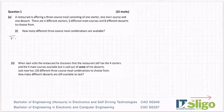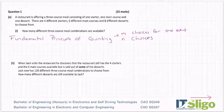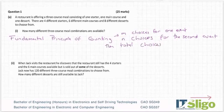This is what's called the fundamental principle of counting, and you could be asked for a definition of this. The fundamental principle of counting tells me that if I have m choices for one event and n choices for the second event — you can pick any letters, they could be x and y — then the total choices is m multiplied by n. That is the fundamental principle of counting.